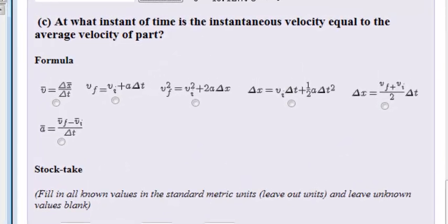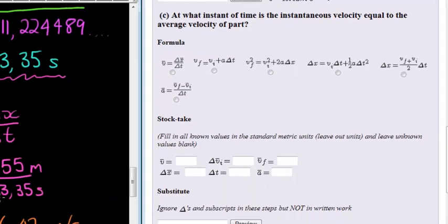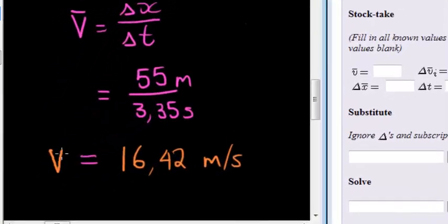At what instant of time is the instantaneous velocity equal to the average velocity of part B? So in the previous question we calculated the average velocity.